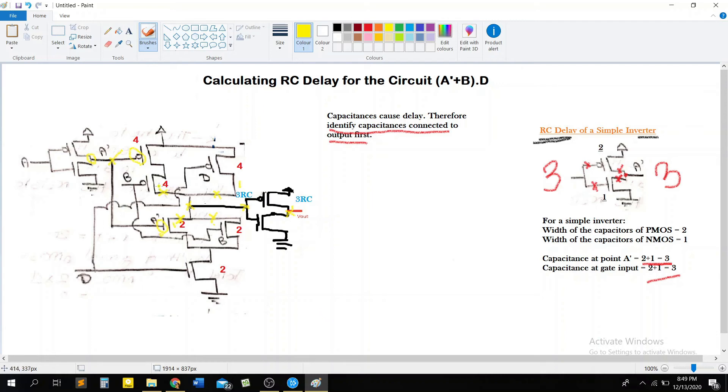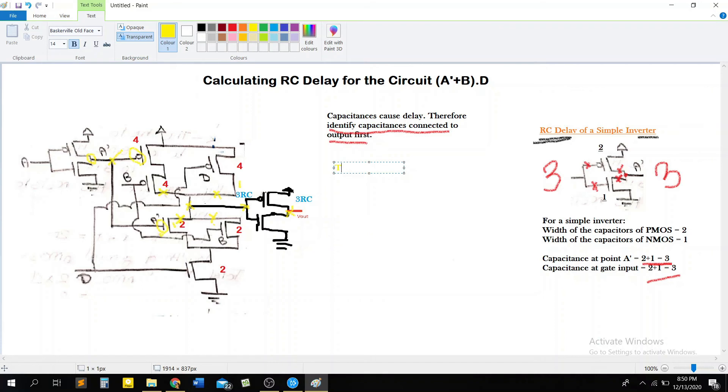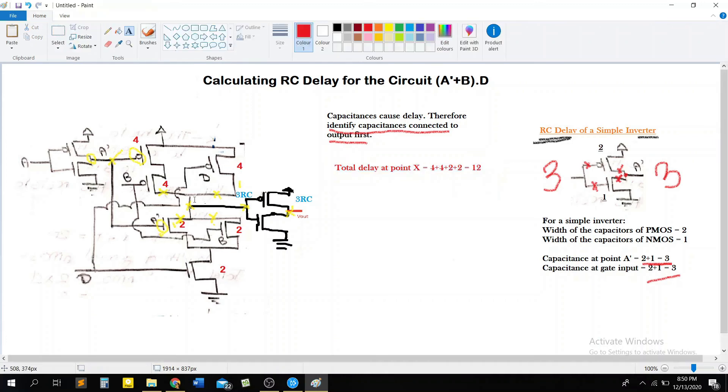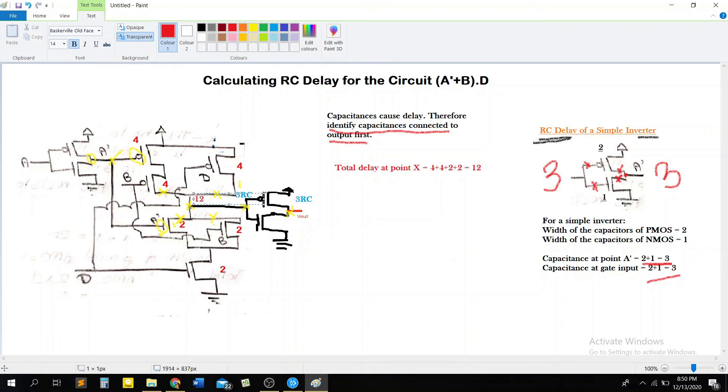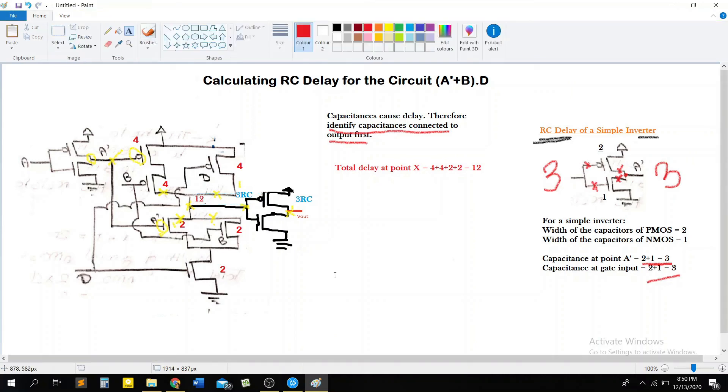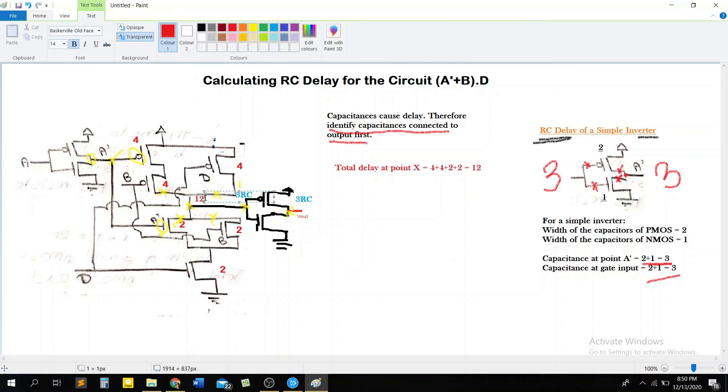So remember that the delay of a single capacitor we calculated it. This one is going to be 4 and this one is going to be 4. So the total there is going to be, I'm just going to call that point X. So we are going to get a total delay of 12 at that point, because of the 4 directly connected transistors. Okay. So I hope I'm clear at that point. If I'm not clear, if you need some more help, feel free to leave a comment and I'll explain it further there. So we got 12RC here at this point.